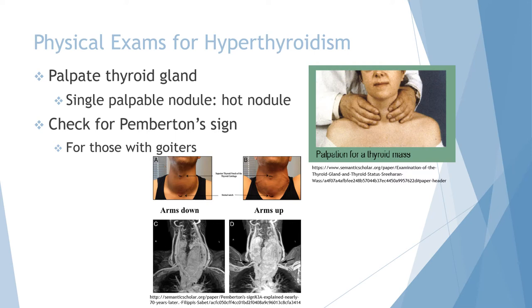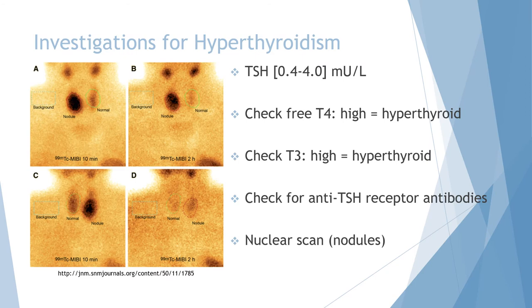We can also look for the Pemberton sign when the patient raises both arms up until they touch the sides of their face. This exacerbates the mechanical blocking effect of any swollen thyroid gland. Therefore, a positive Pemberton sign is any facial congestion, cyanosis, and after approximately one minute, respiratory distress upon assuming this position.